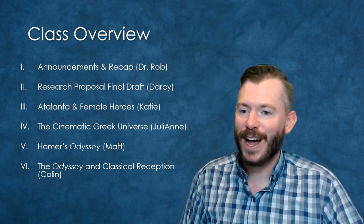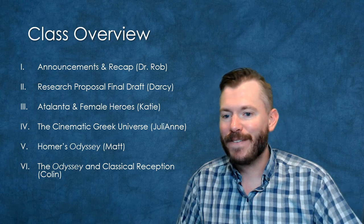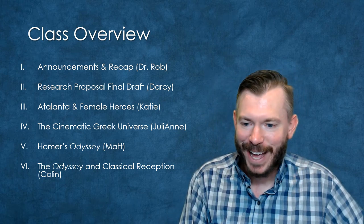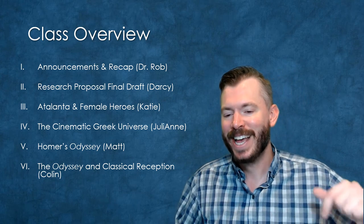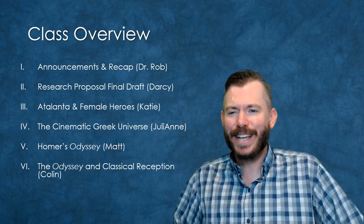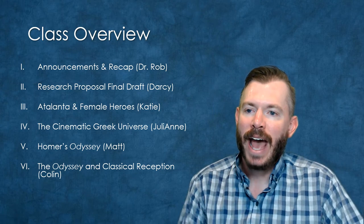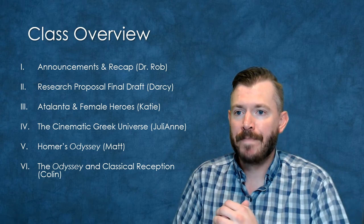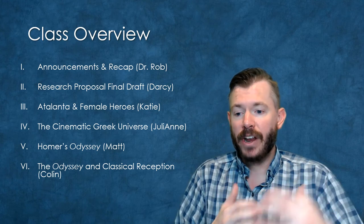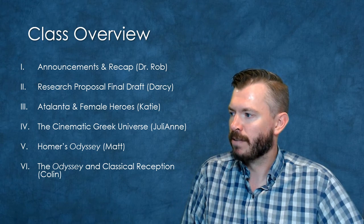This is what we're going to talk about today: an announcement and recap by me. Darcy will talk about the final draft of the proposal. Katie is going to talk about Atalanta and female heroes and heroines. Julianne is going to talk about the interrelated cinematic Greek universe, and then Matt and Colin are going to talk about our text for today, The Odyssey — Matt giving an overview and Colin talking about how it's been received over time.